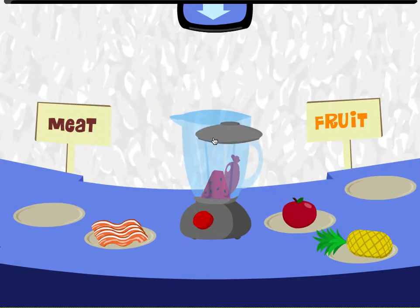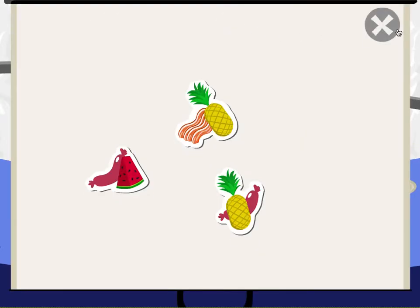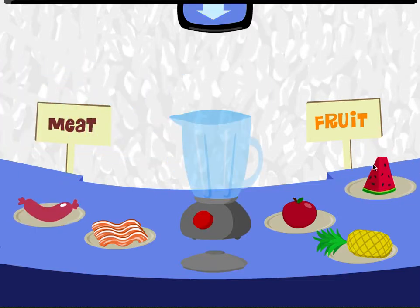Sausage! Watermelon! We used that meat with that fruit before. Try again! Click on the chart to see which smoothies you've made!